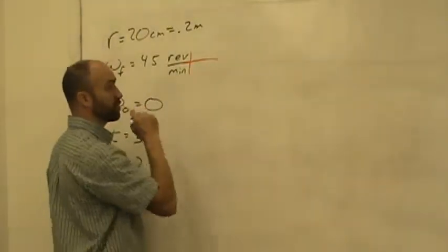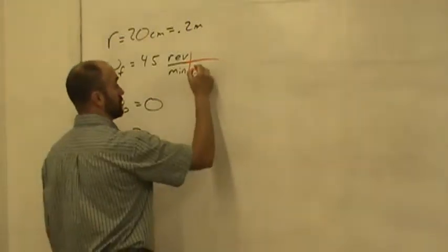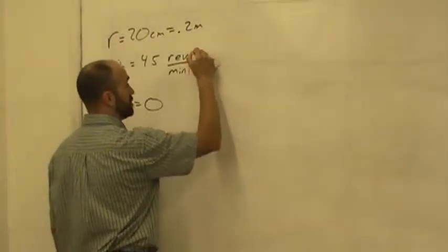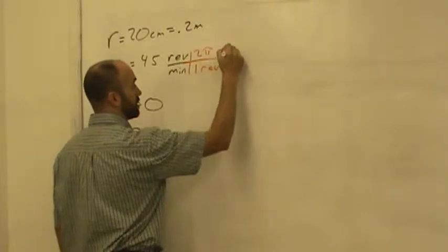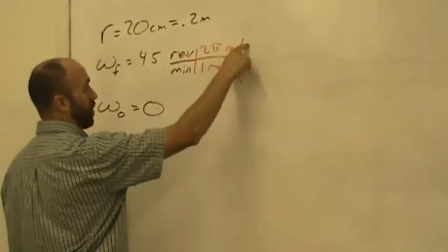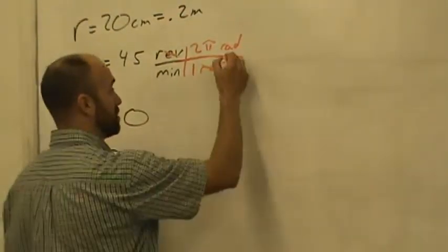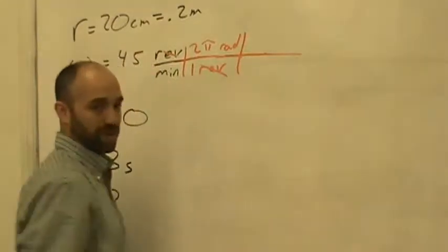And to get rid of revolutions, we're going to remember that one revolution is equal to 2π radians. So we're going to say one revolution, 2π radians. Revolutions are going to cancel out. And we'll have radians per minute. But those aren't standard units either. We need radians per second. So we've got to do this one more time. Now we've got to get rid of the minutes.